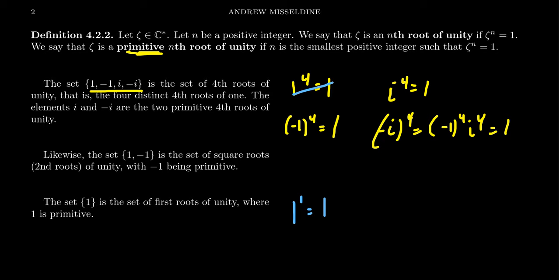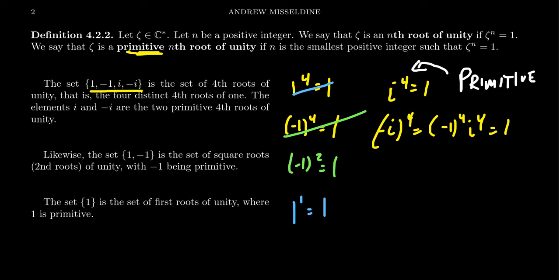Negative 1 is also not a primitive fourth root of unity, because negative 1 squared equals 1 — a smaller power gives 1. It is a fourth root of unity because the fourth power gives you 1, but it's not primitive. On the other hand, i and negative i are in fact primitive fourth roots of unity, because no smaller positive power of i will get you to 1 sooner than 4. Same thing for negative i.